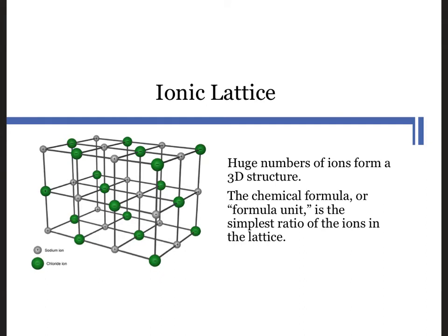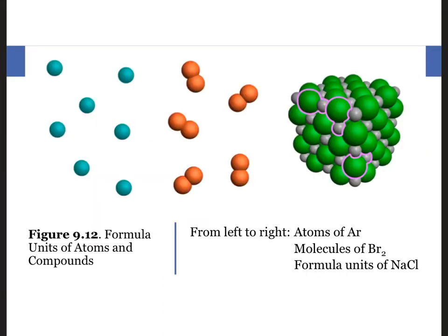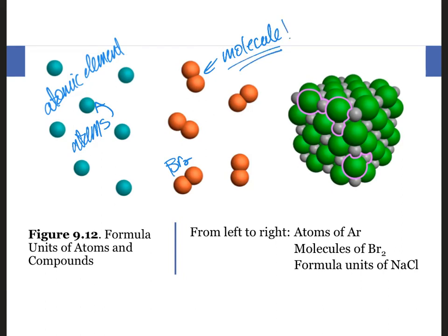Let's compare this ionic lattice to other types of formulas. If we have an element that exists as atoms, we call this an atomic element and refer to the individual units as atoms. If we have one of the seven diatomic elements—hydrogen, nitrogen, oxygen, fluorine, chlorine, bromine, which is pictured here, or iodine—because they come in pairs and have a covalent bond, we call the individual units molecules. Please note that only nonmetal atoms bound to other nonmetal atoms can form covalent bonds and be called molecules.